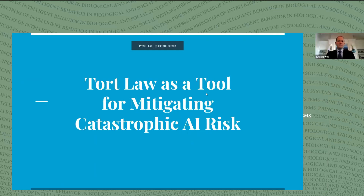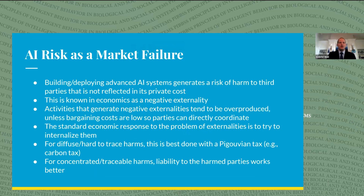Thank you all for coming to my talk. As Paul said, I'm a law professor, and so I'm thinking through how tort law can be used to mitigate AI risk, particularly catastrophic AI risk. The first step is: do we have a policy problem here? My analysis starts with what are the relevant market failures? The key market failure in AI is that building and employing advanced AI systems generates a risk of harm to third parties that isn't reflected in the private cost or in market prices.